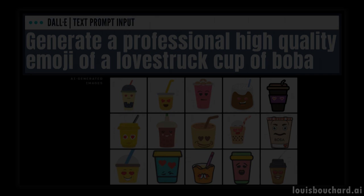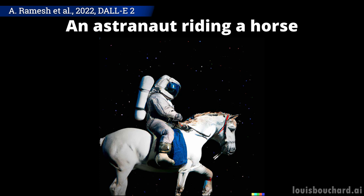Last year, I shared DALL-E, an amazing model by OpenAI capable of generating images from a text input with incredible results. Now it's time for its big brother, DALL-E 2, and you won't believe the progress in a single year. DALL-E 2 is not only better at generating photorealistic images from text, the results are 4 times the resolution.